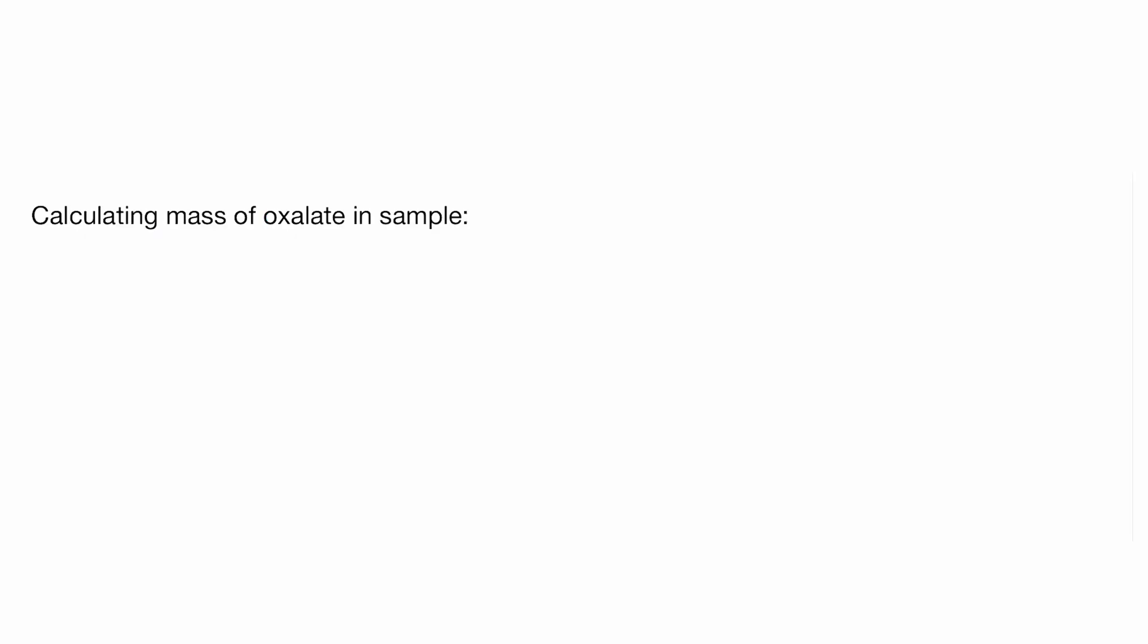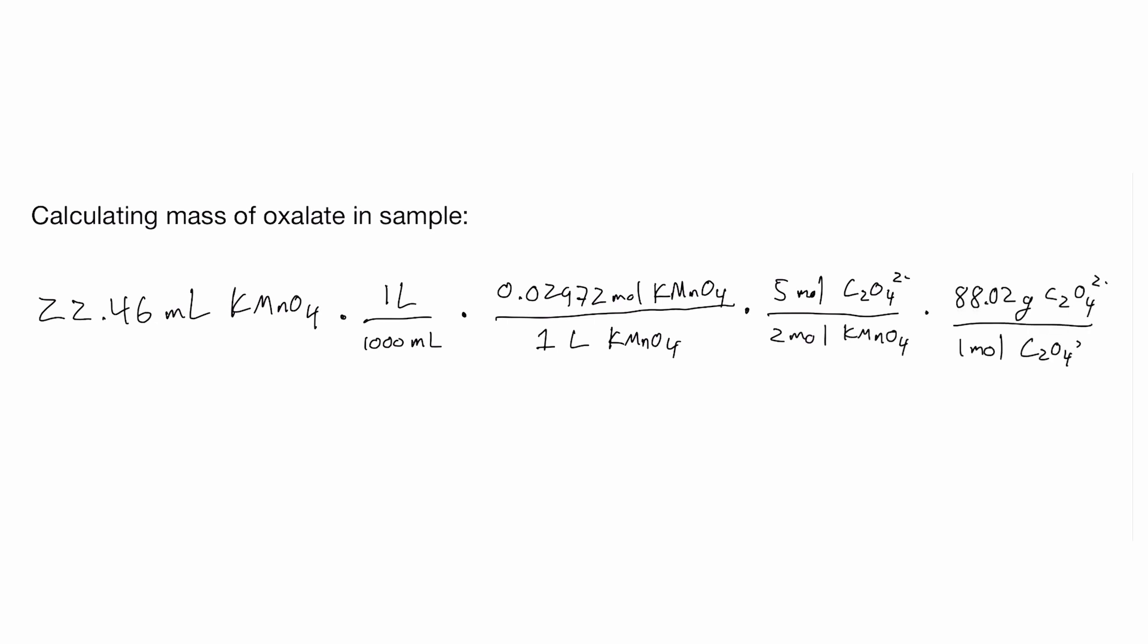After you've titrated your green crystal sample, you can calculate the mass of oxalate. This is done by taking the volume of permanganate used, plus a unit conversion, and multiplying it by the concentration, then the molar ratio between oxalate and permanganate, and then multiplying it by the molar mass of oxalate.